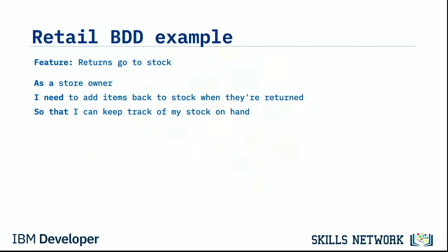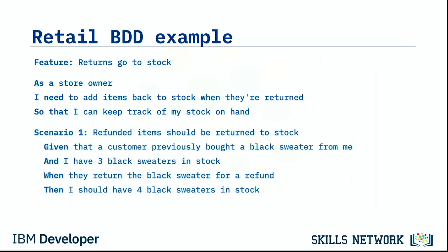You could think of this as a user story with acceptance criteria, where the acceptance criteria are the scenarios. This first scenario is called 'Refunded items should be returned to stock.' It reads as follows: given that a customer previously bought a black sweater from me and I have three black sweaters in stock, when they return the black sweater for a refund, then I should have four black sweaters in stock. It's fairly straightforward — your stakeholders should be able to look at this and say, yes, this is how returning items to stock works.